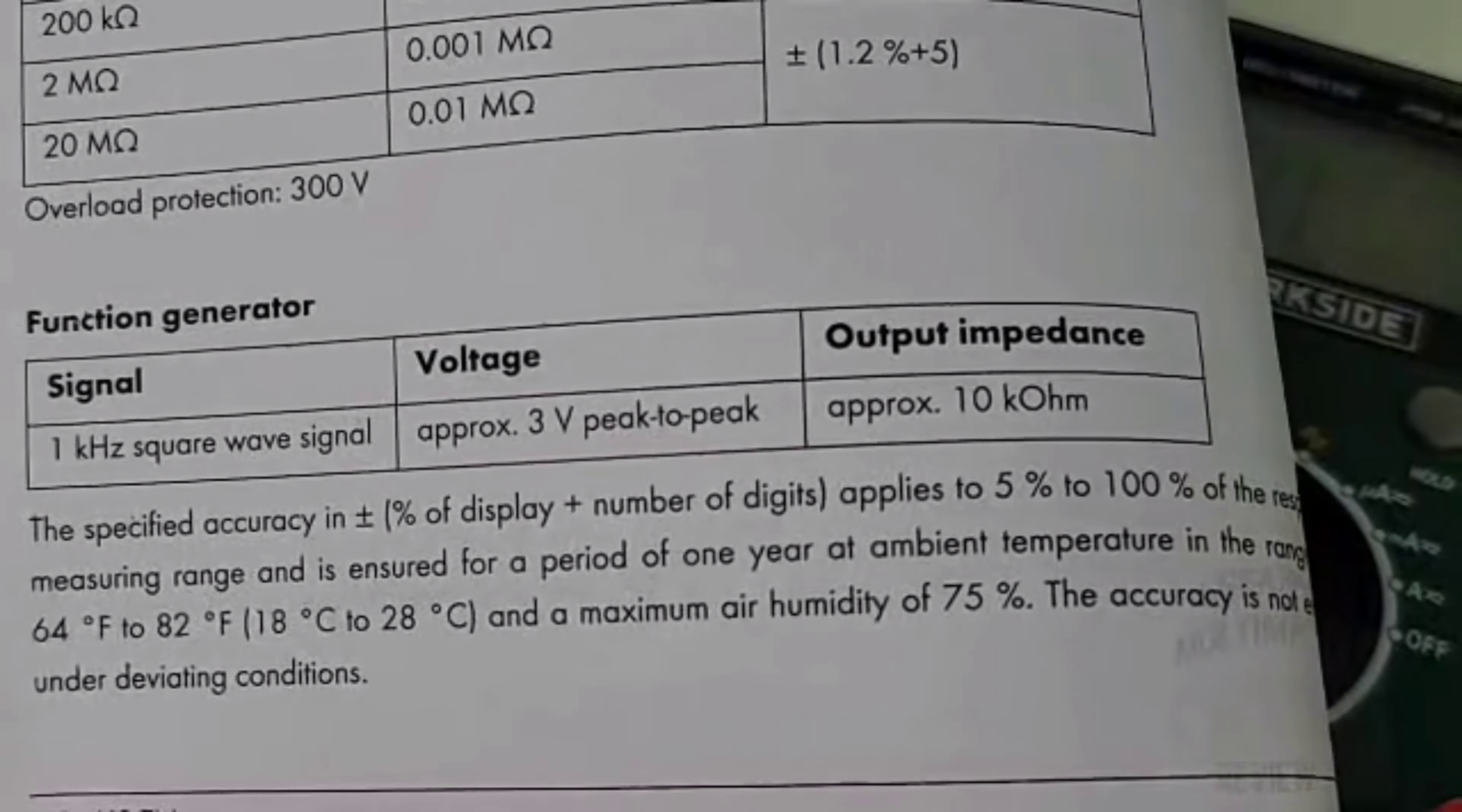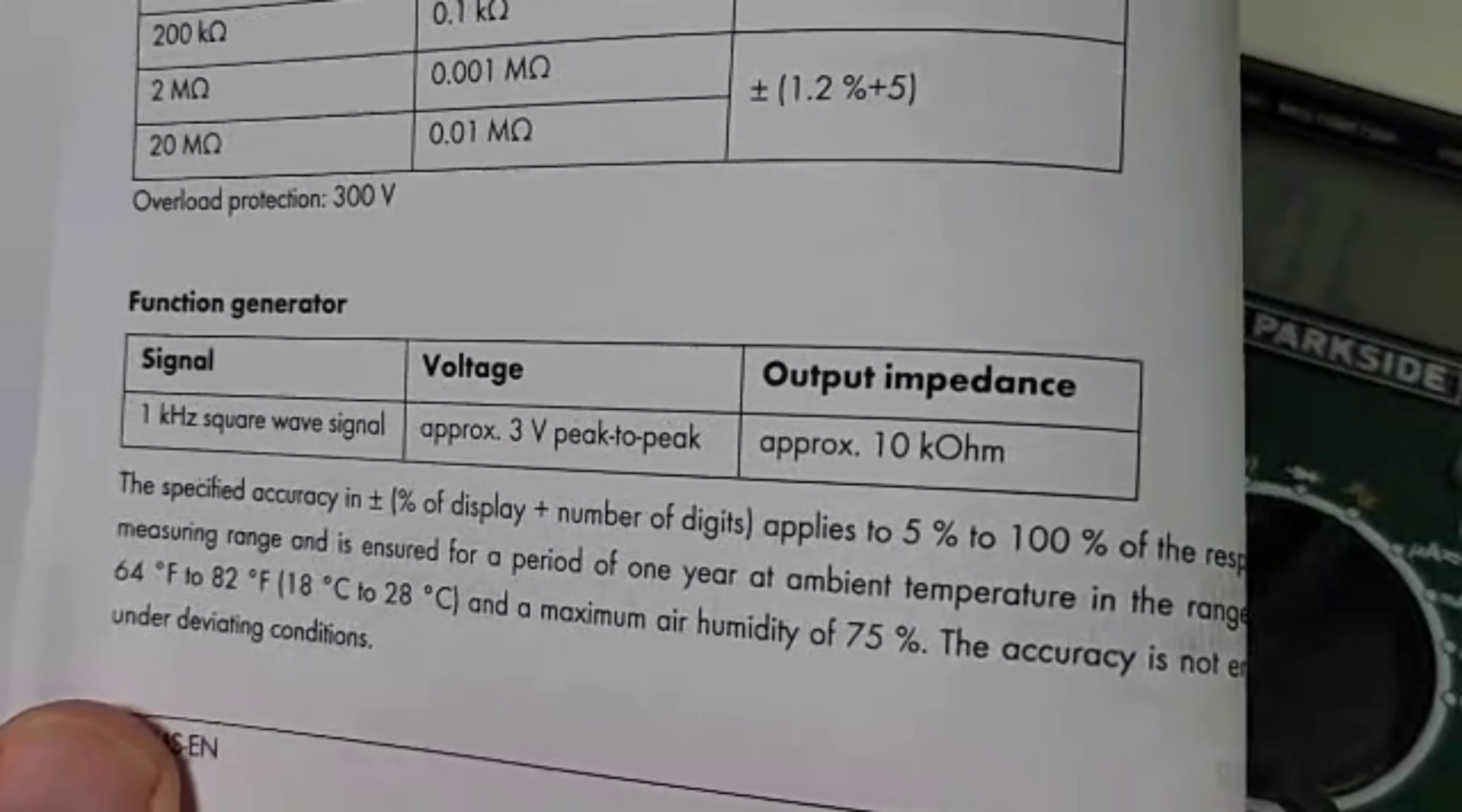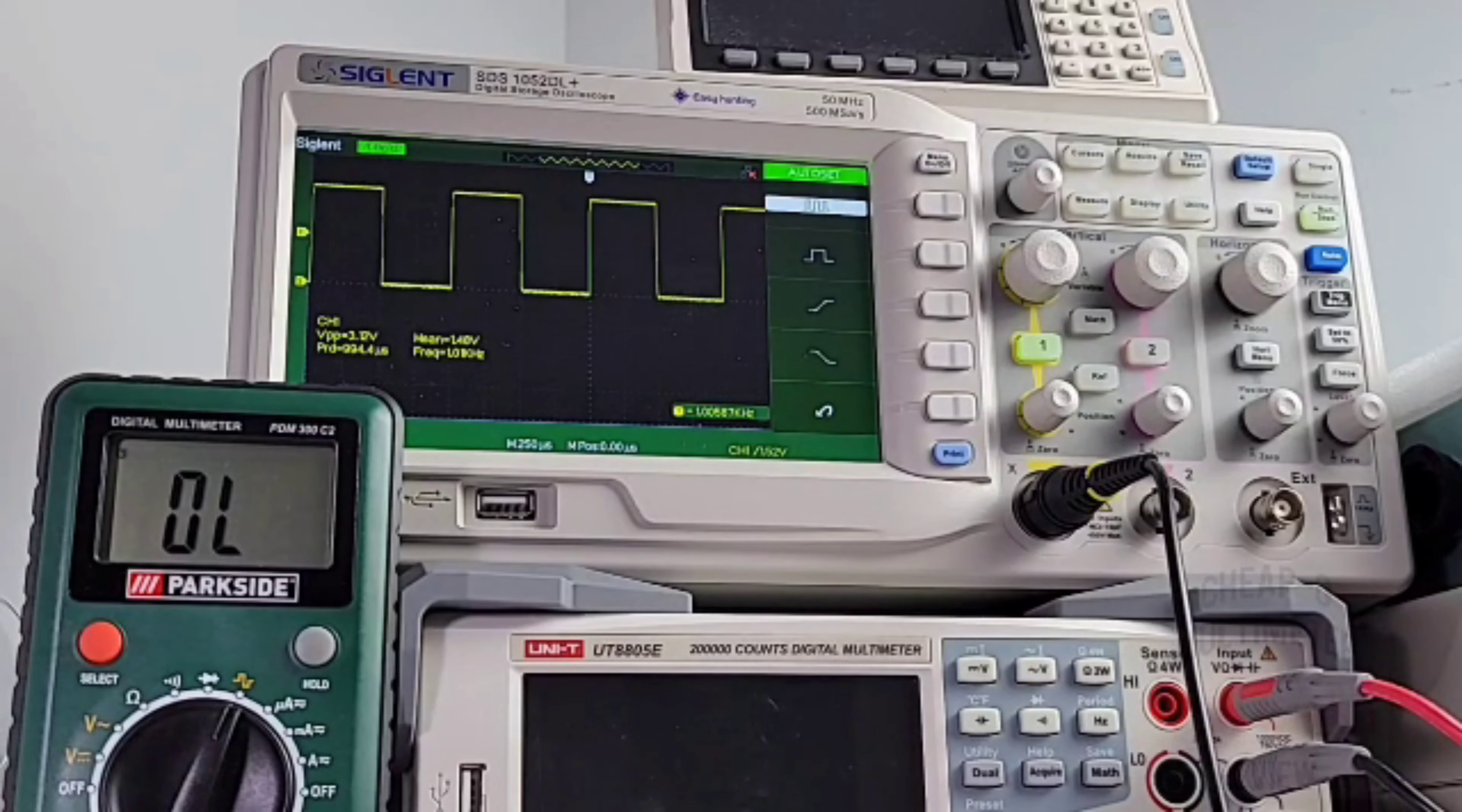According to the manual, the function generator built into this Parkside gives out a signal of 1 kilohertz square wave, 3 volts peak to peak, output impedance about 10 kiloohm. Let's see how good that square wave is. As the manual says, 1 kilohertz and look at that square wave - really nicely done. Good job Parkside.